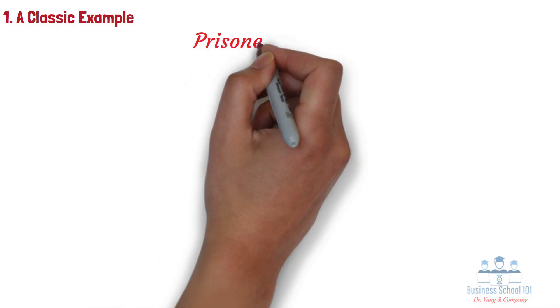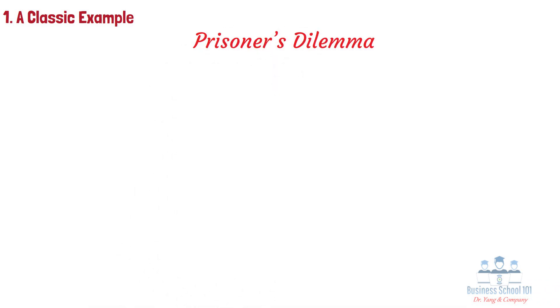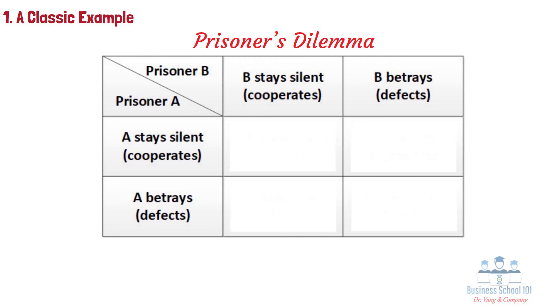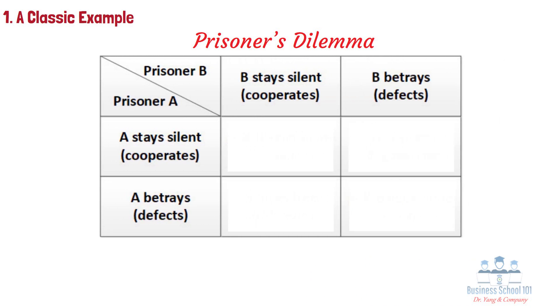Before we introduce game theory, let's check one of its most classic examples: the prisoner's dilemma. Consider two suspects, Alice and Bob, who have been arrested for a crime. The police do not have enough evidence to convict either suspect, so they offer each of them a deal.